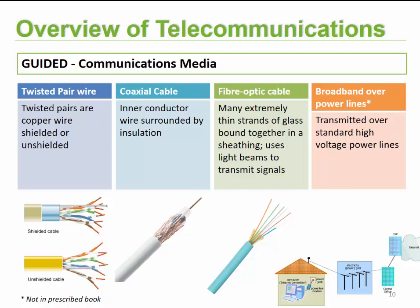For guided media there are four major categories: twisted pair, coaxial cable, fiber optics, and broadband over power lines. Broadband over power lines is not freely available in the South African and African context but is used in certain other countries. Twisted pair comes in two formats — shielded or unshielded. With twisted pair you have pairs of cables that are twisted around each other to counteract electromagnetic interference and ensure the signal can travel a certain distance.